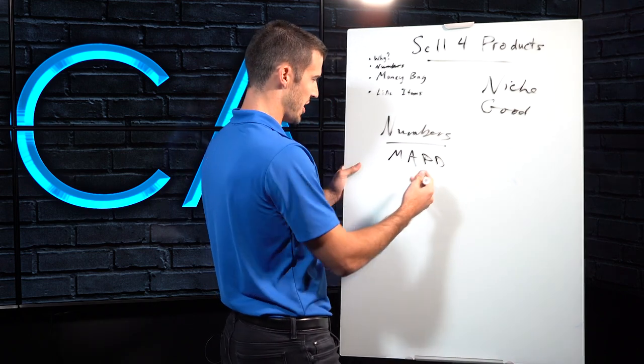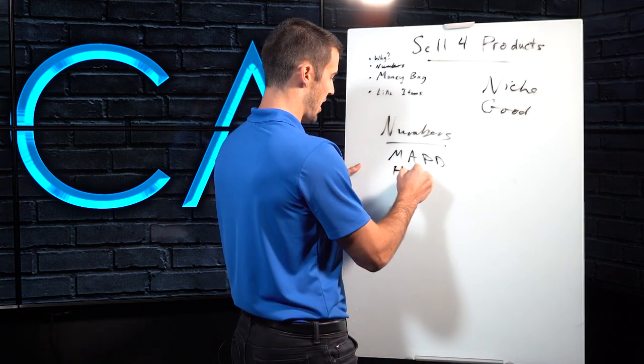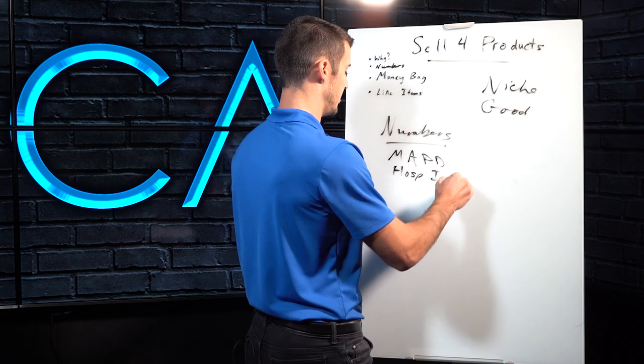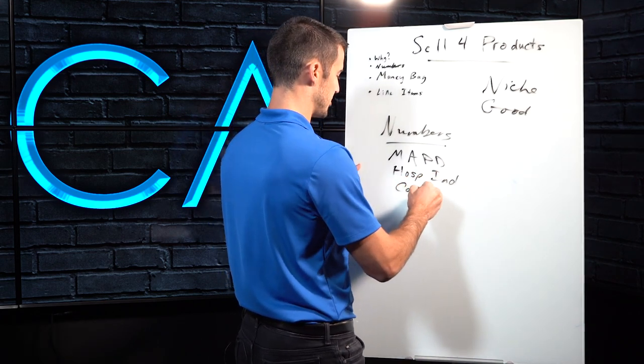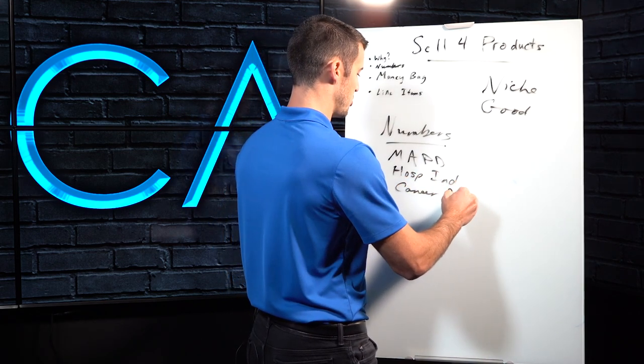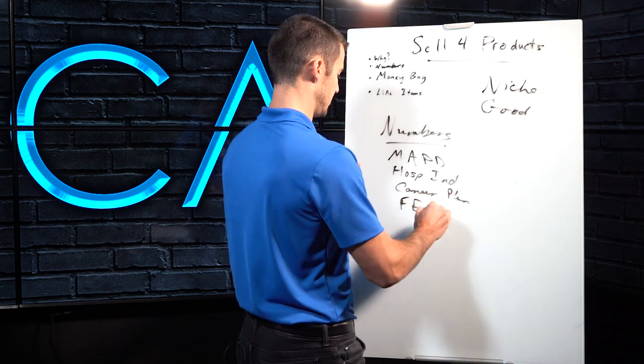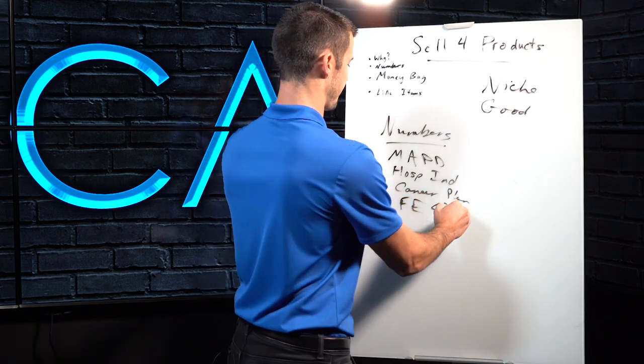Medicare Advantage. And then you're fact finding and you add on a hospital indemnity plan. And let's say you end up adding on a cancer plan. And then let's say that you end up adding on a final expense policy. Final expense life insurance policy.